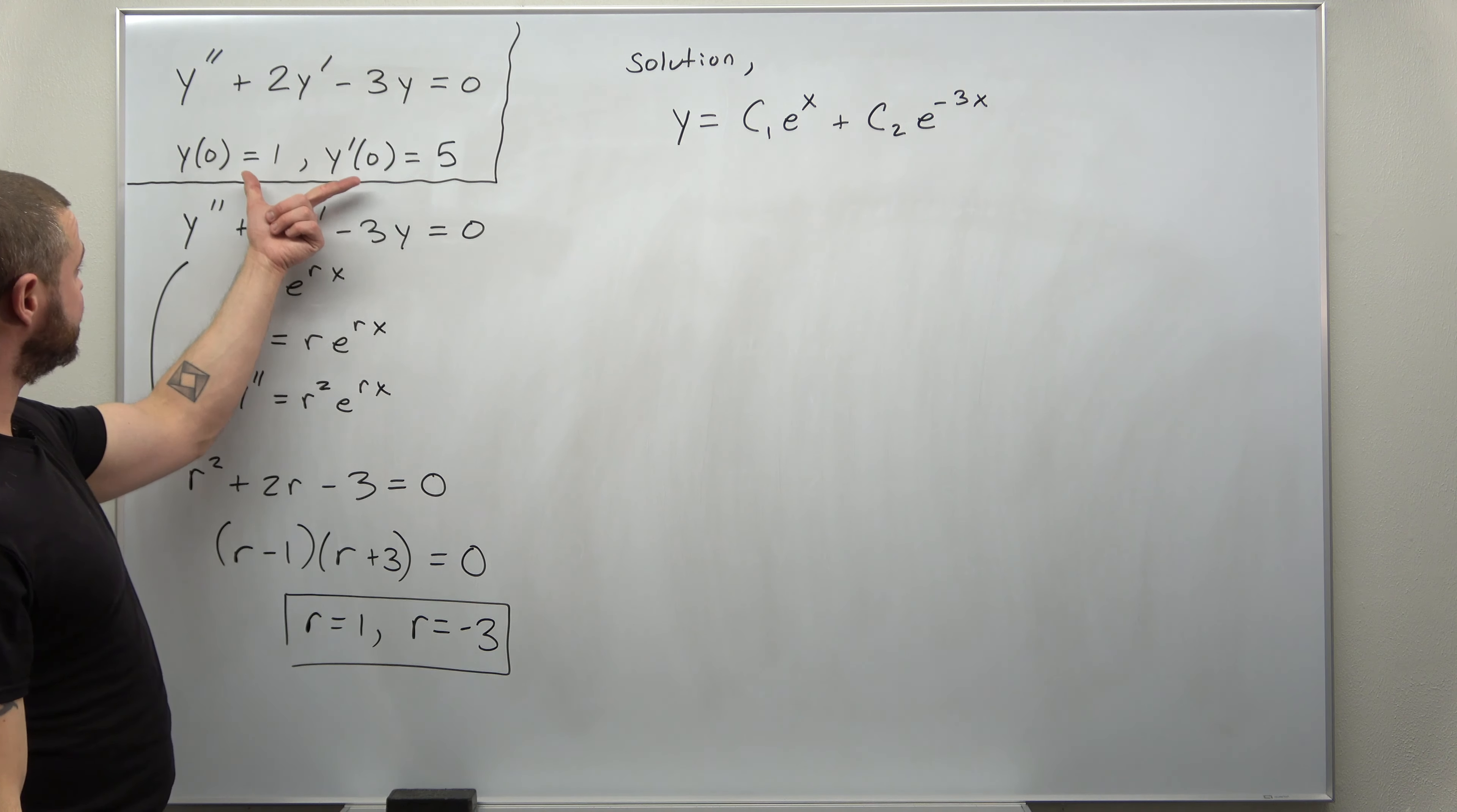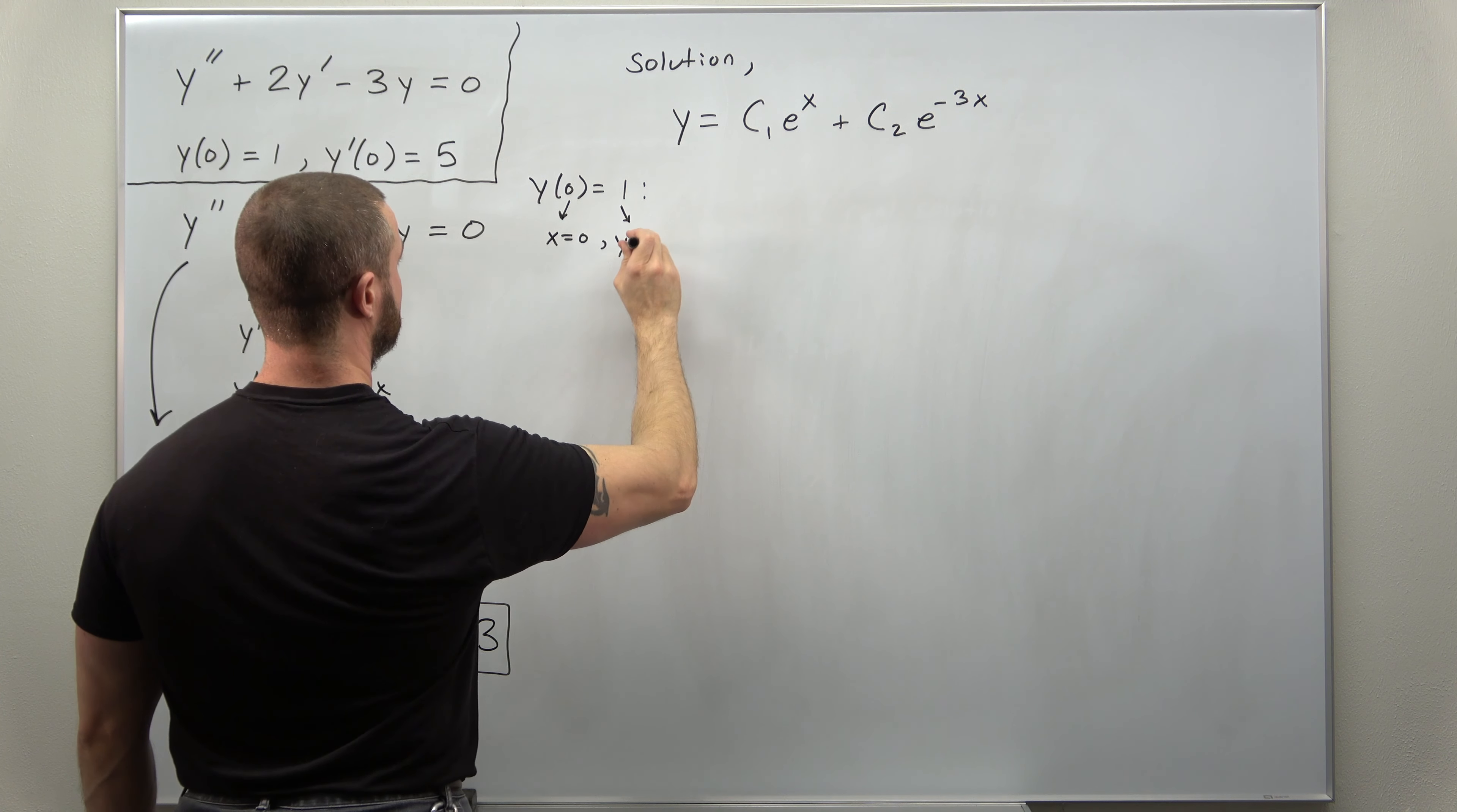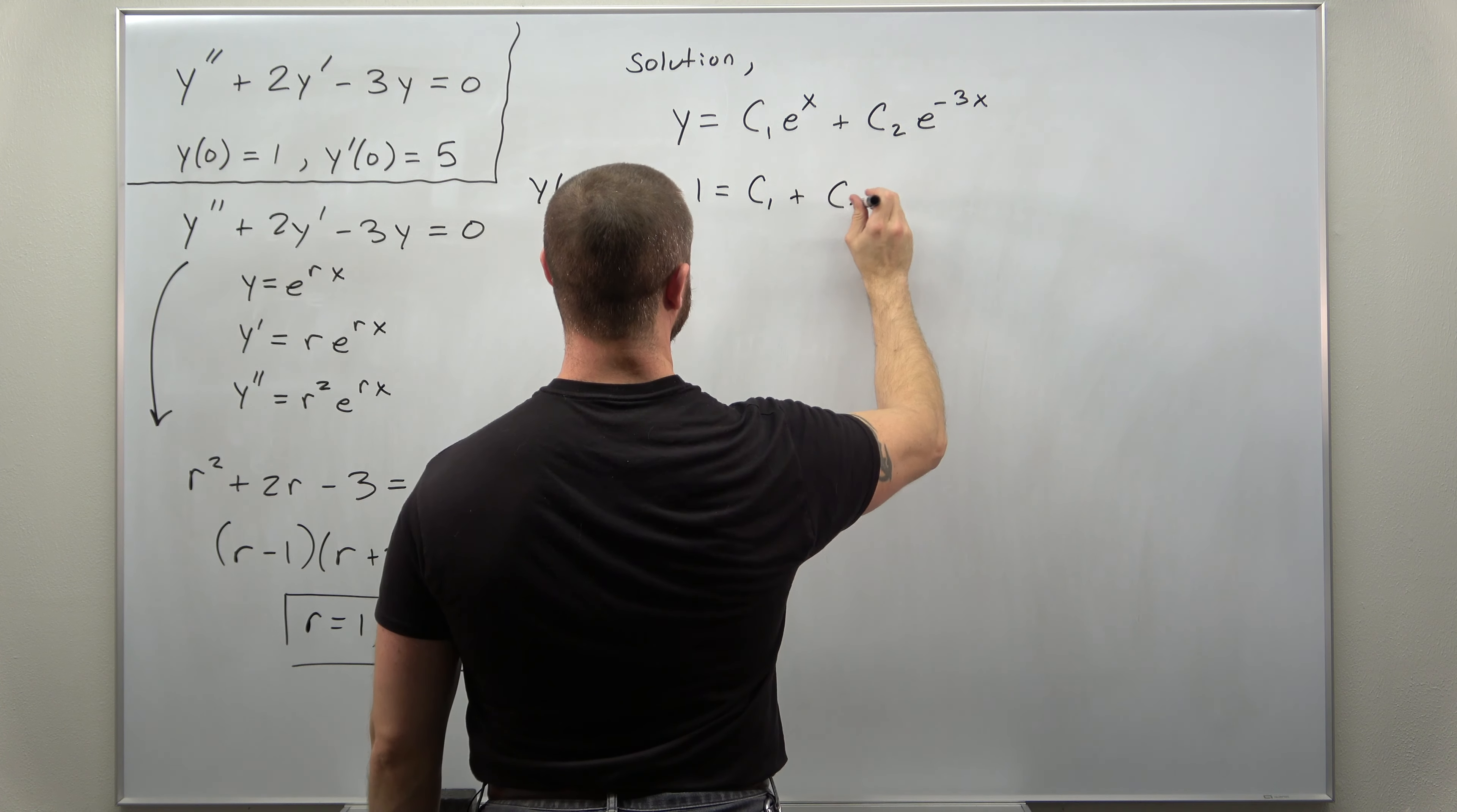From here, we're going to want to make use of our initial conditions. So we have our function initial condition and derivative initial condition. Let's go ahead and plug those in. So first here, we have y of 0 equals 1. So that's telling us that x is 0 and y is 1. Your function term y becomes 1. And when I plug in x is 0, we get e to the 0 in two spots. e to the 0 is 1. So what we're left with on the right-hand side is c1 plus c2.